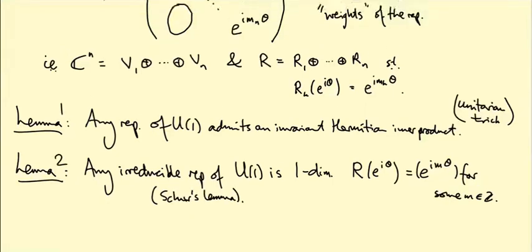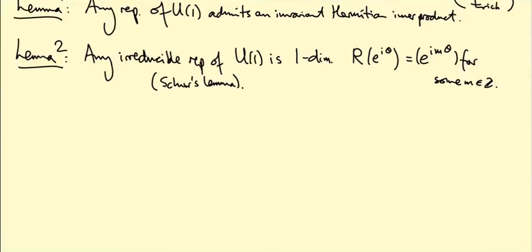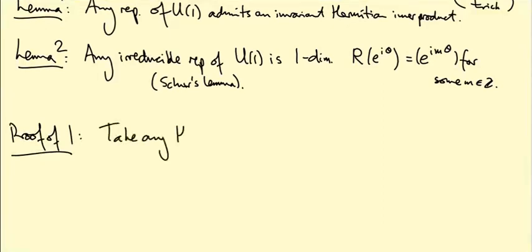These two lemmas together imply the theorem. Let's prove Lemma 1 first. The idea will be to take any Hermitian inner product — like the standard one on Cⁿ — and average it over the group.